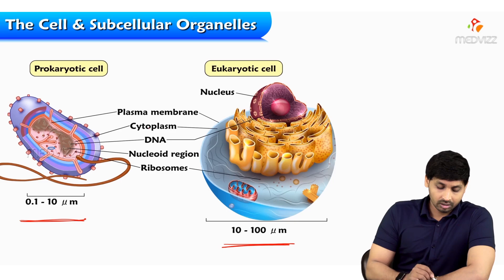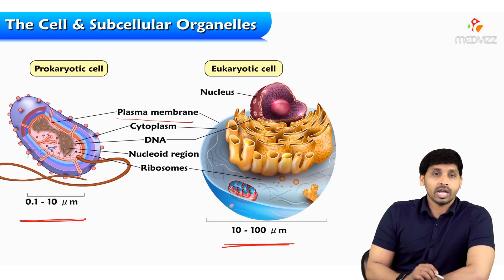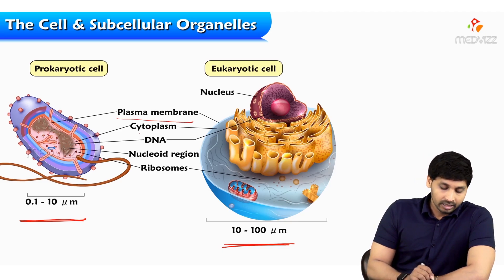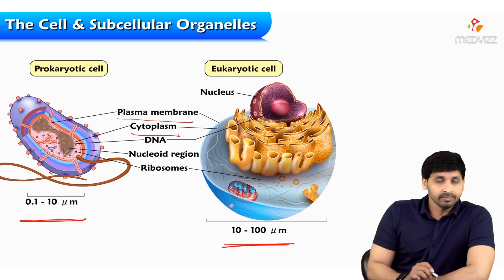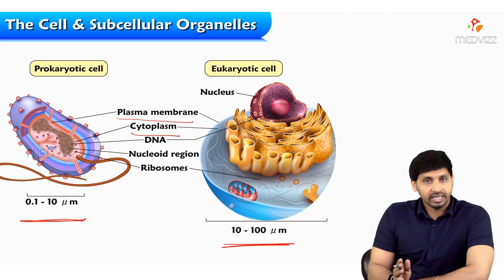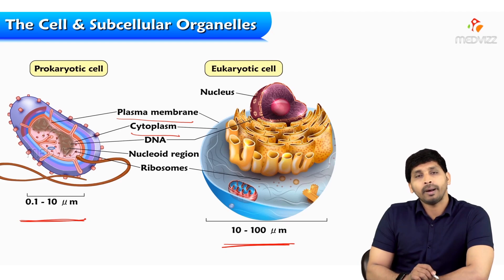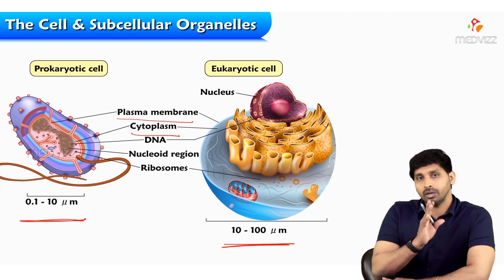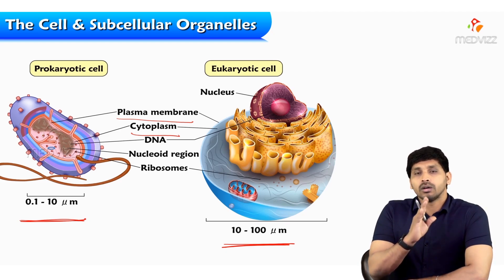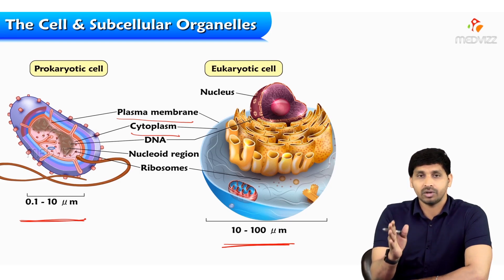In the diagram, wherever plasma membrane is mentioned, prokaryotes have no plasma membrane — in its place they have a cell wall. There is no well-defined cytoplasm in prokaryotes, whereas eukaryotes have a well-defined cytoplasm. DNA is present in both, but in prokaryotes there is a nucleolus region, while in eukaryotes we have a distinct nucleus.